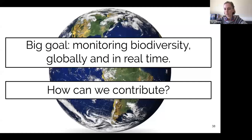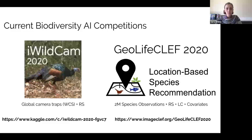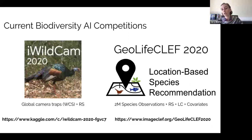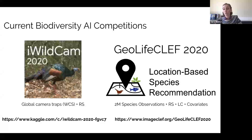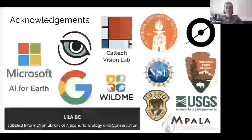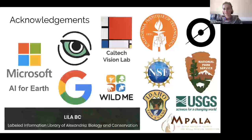As all these data streams become desiloed and more accessible, I think some of the coolest things we as computational or data scientists can do is come up with intelligent ways to combine those data streams. There are two biodiversity-focused AI competitions running right now: the iWildCam competition at CVPR, which I've been running for three years and this year provides satellite data for every camera trap location; and GeoLifeCLEF, which builds species distribution models from occurrence data combined with remote sensing and environmental features like weather.